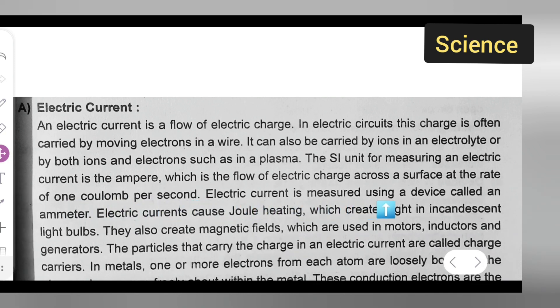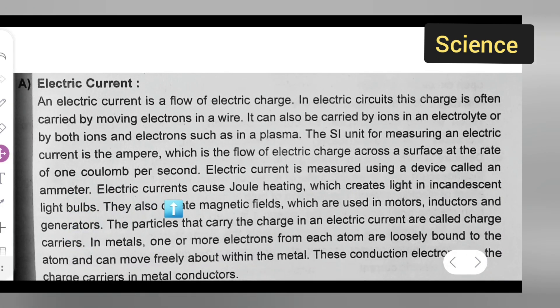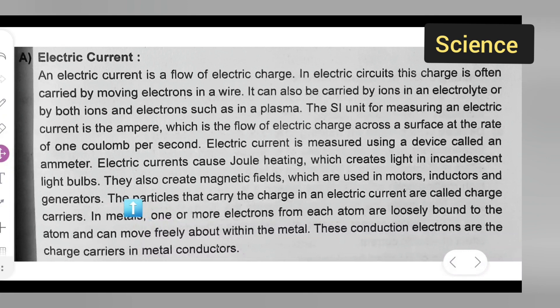Electric currents cause Joule heating, which creates light in incandescent light bulbs. They also create magnetic fields which are used in motors, inductors, and generators. The particles that carry the charge in an electric current are called charge carriers.